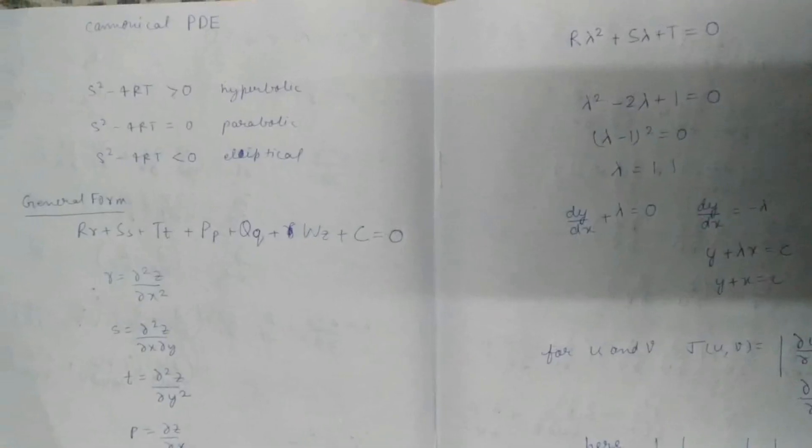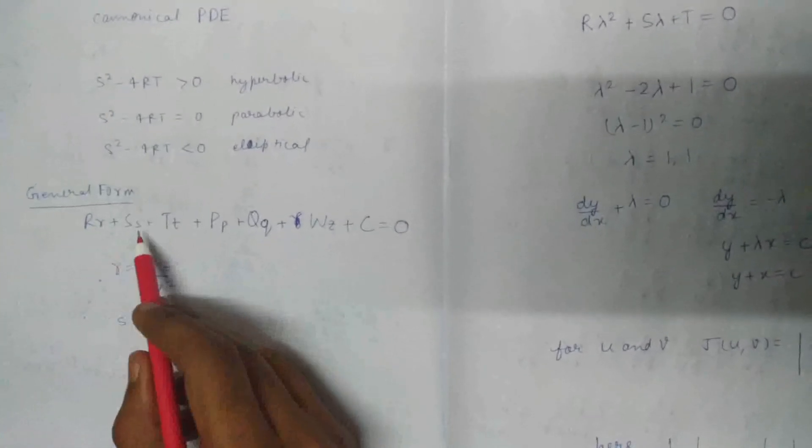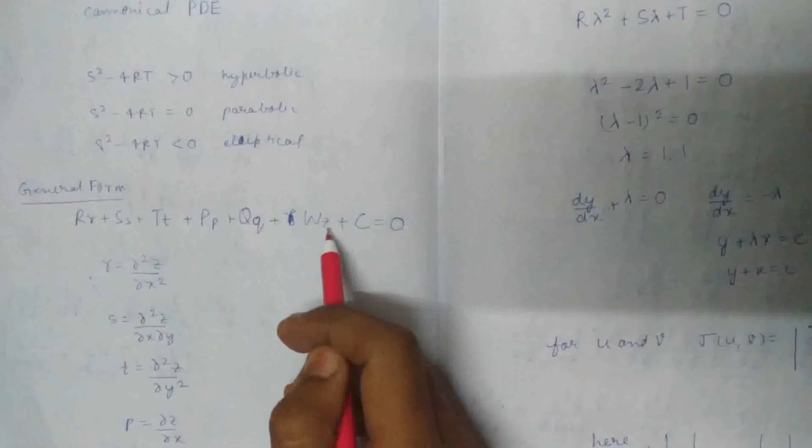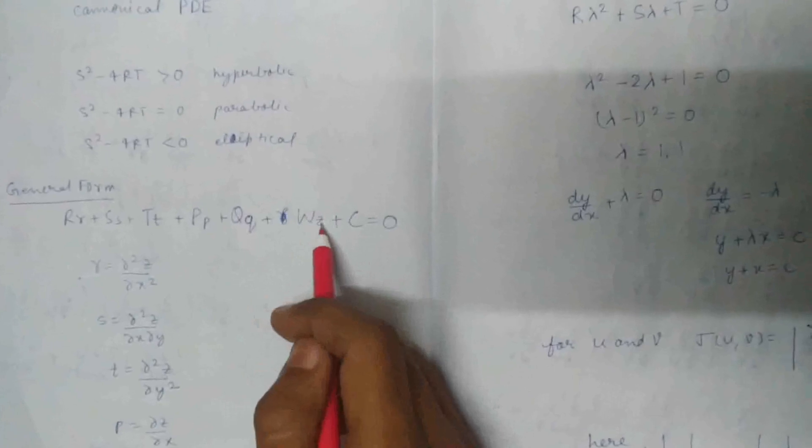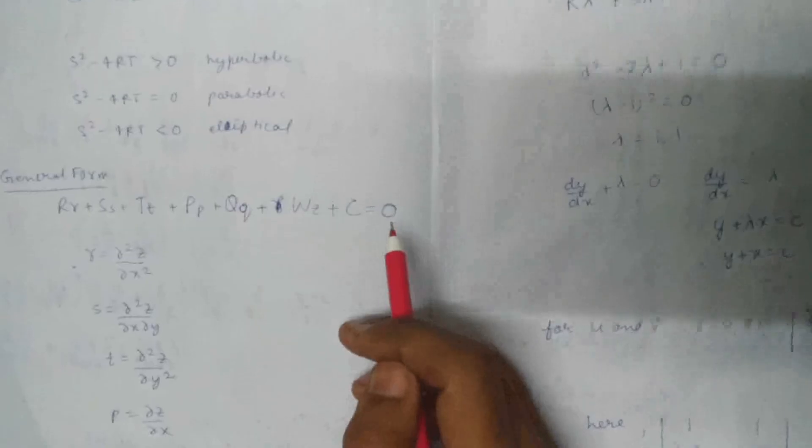Our PDE in general form is like this: capital R times r plus capital S times s plus capital T times t plus P times p plus Q times q plus W times z plus C equals zero. This is the general form where r, s, t, p, q are variables and C is the constant.